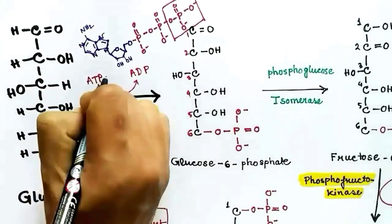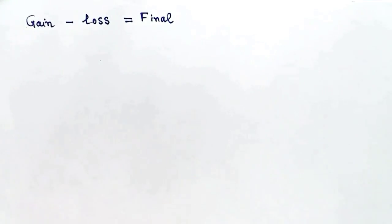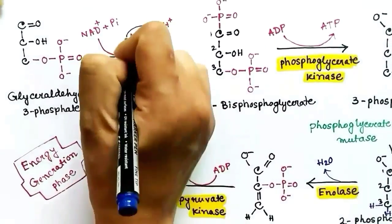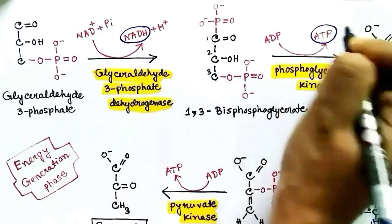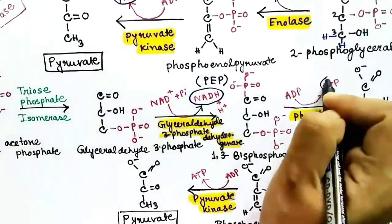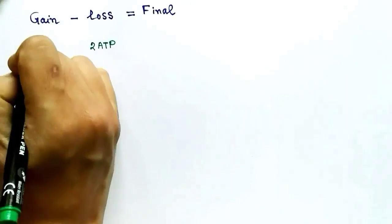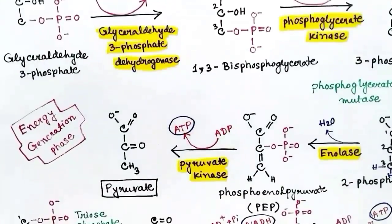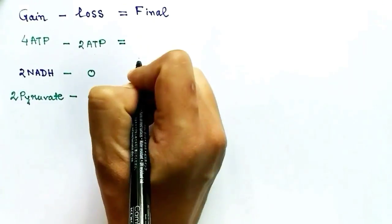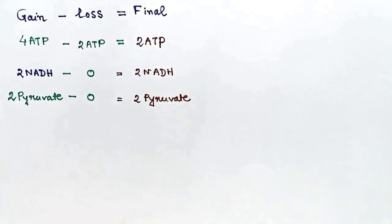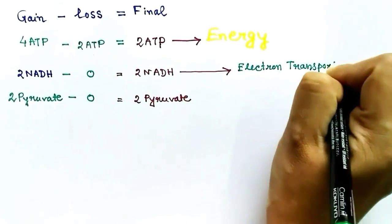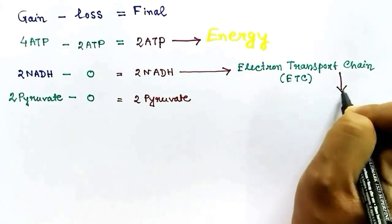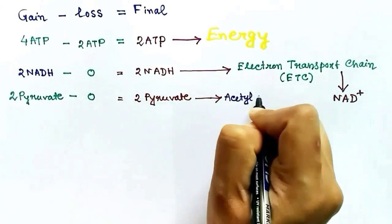Two ATPs were consumed in the first phases of glycolysis. Two NADH were produced in the energy generation phase. Four ATPs were gained in total — two from each glyceraldehyde-3-phosphate molecule. The net result is two ATPs gained, two NADH produced, and two pyruvate molecules. The NADH will go to the electron transport chain to produce more ATPs, and pyruvate will be converted to acetyl-CoA to enter the Krebs cycle.